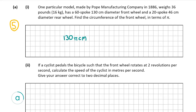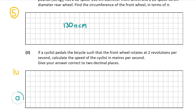Now let's look at part two, which is worth 10 marks. This says that if a cyclist pedals the bicycle such that the front wheel rotates at two revolutions per second, calculate the speed of the cyclist in meters per second. One revolution is 130π centimeters, but we need two revolutions, so it's 2 times 130π.